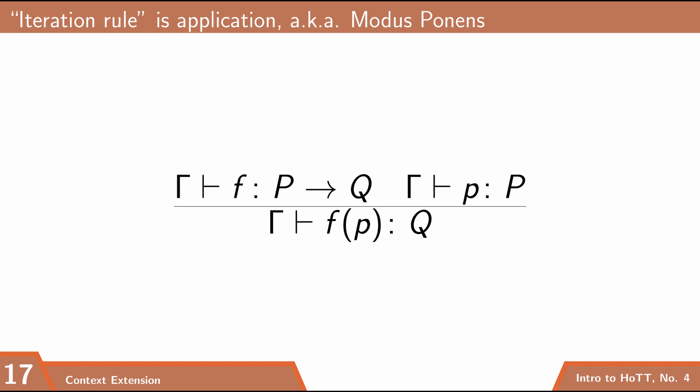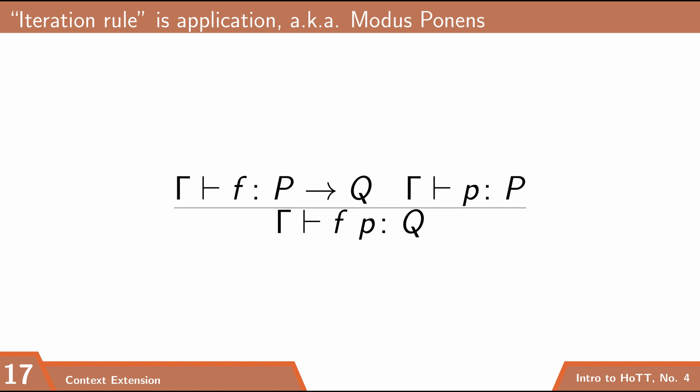We've already seen the iteration rule, which tells us how to use things of this type — namely modus ponens. Modus ponens says that if I have something of type P arrow Q and something of type P, then I can get something of type Q. If f is my term of type P arrow Q and p is my term of type P, then f applied to p is the resulting term of type Q. This is more commonly called the application rule.